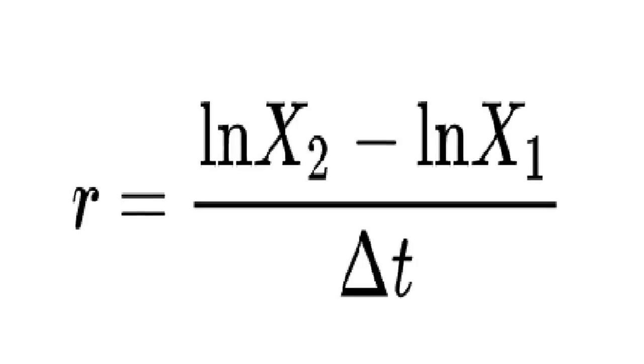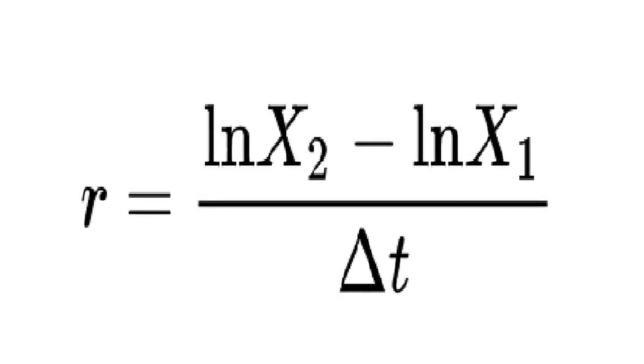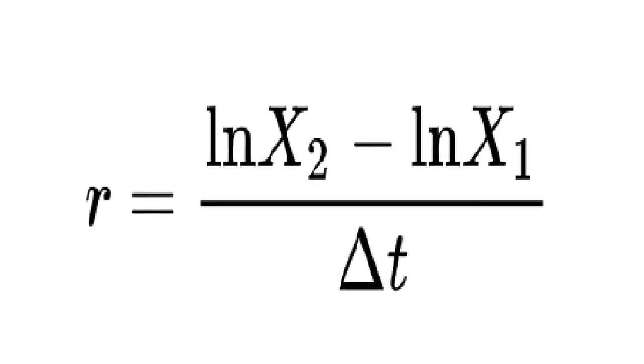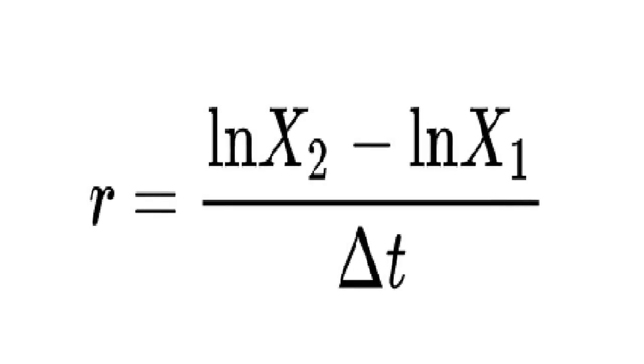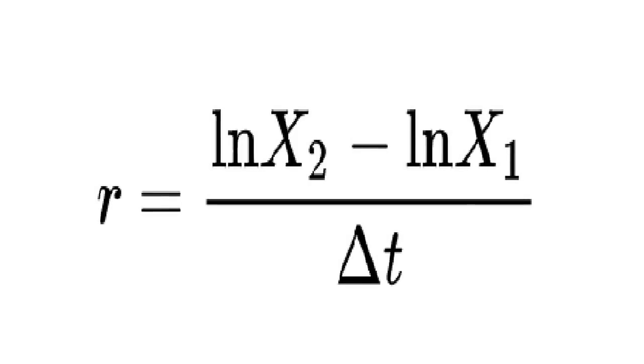Delta T is the change over time, usually expressed in millions of years. Subtracting the logarithm of X1 from the logarithm of X2 and dividing it by delta, we end up with R, a quantifiable rate of evolutionary change, which he named a Darwin.